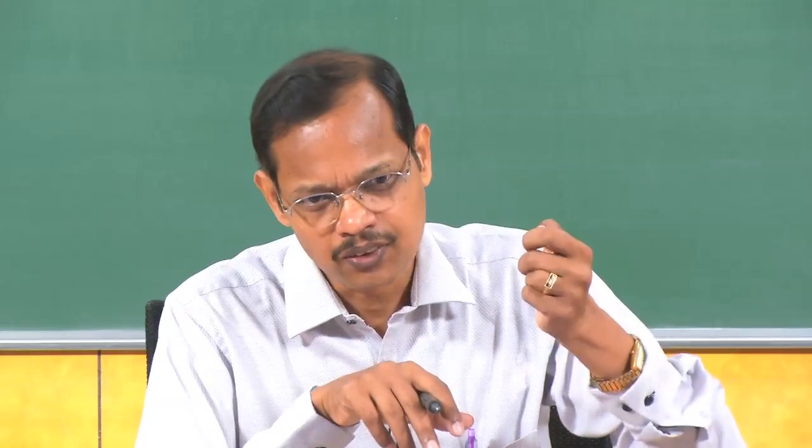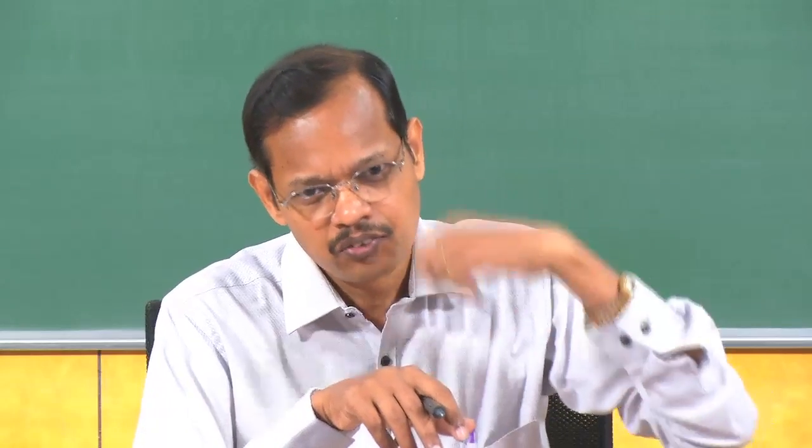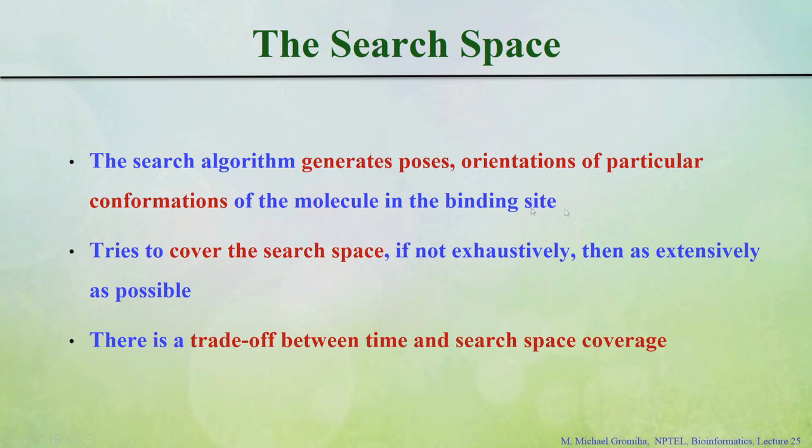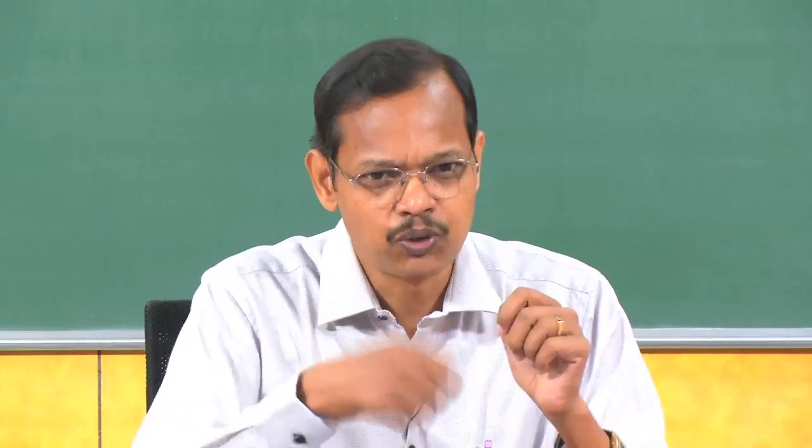For example, if you see simple amino acids with one rotation, they can go 0 to 360 degrees. If there are two, each will rotate - you can systematically do it, but it takes a long time. So there is a trade-off between time and search space coverage: if you have more time, you can search more space; if you have less time, you will get less search space. We need a smart algorithm to cover different search spaces and various poses.